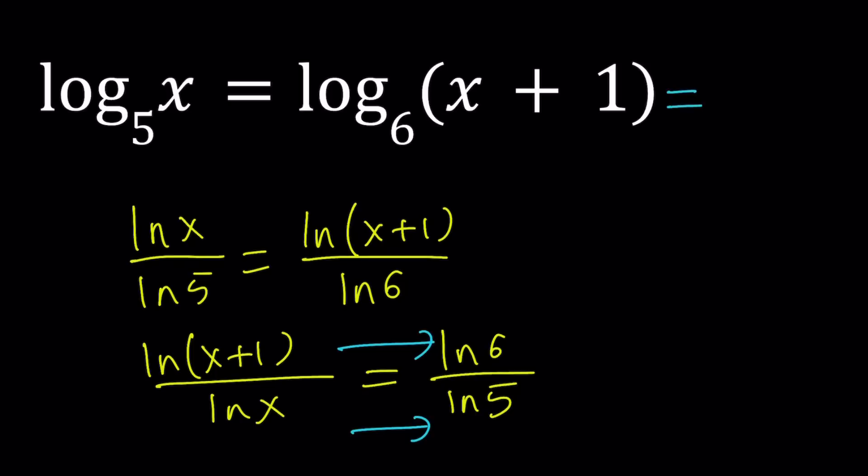I'm going to set both of these equal to y. Any variable will do. And then from here, I'm going to get a system of equations. Log base 5 of x equals y, and log base 6 of x plus 1 equals y. They're equal to the same thing. A lot of times we try to eliminate one of the variables, but in this case, it's going to be helpful.